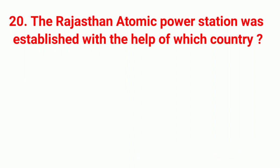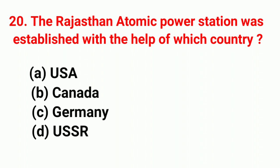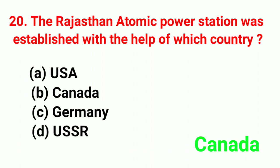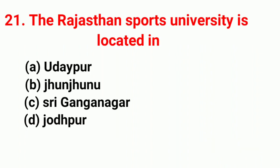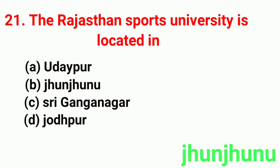The Rajasthan atomic power station was established with the help of which country? Right answer is Kannada. The Rajasthan sports university is located in? Right answer is Jhunjhunu.